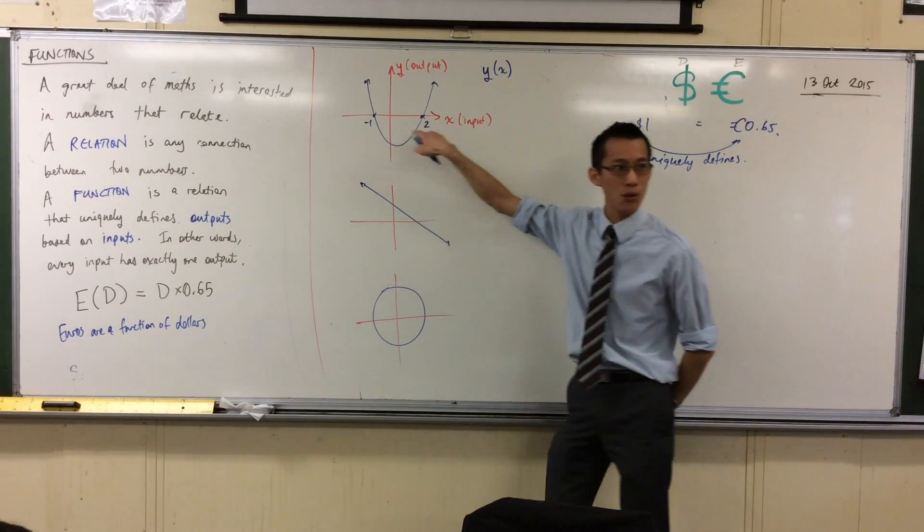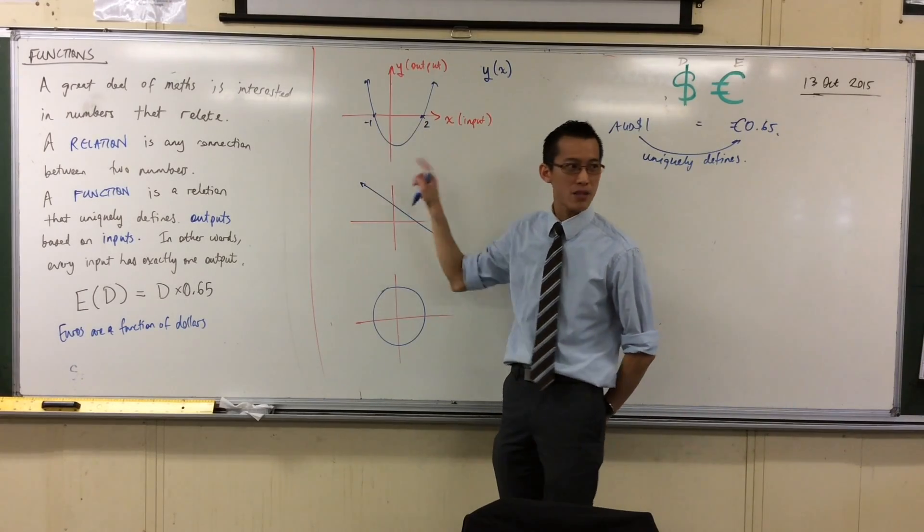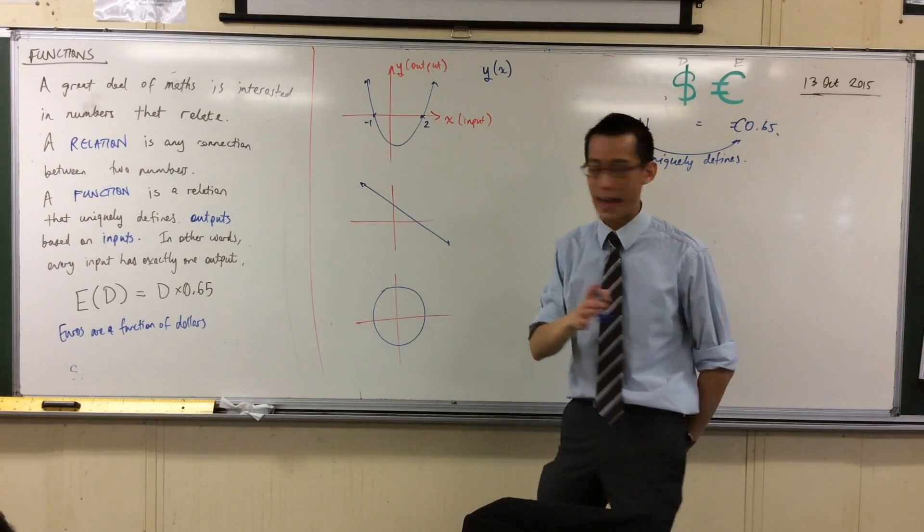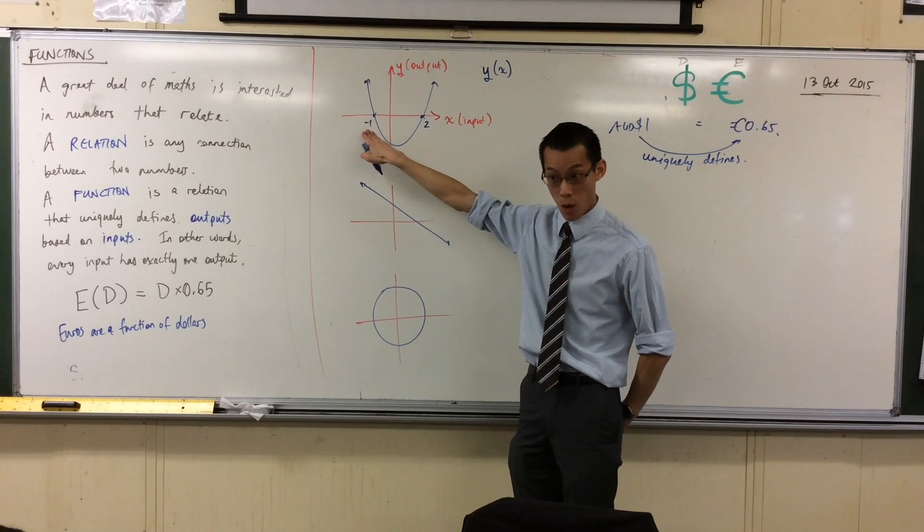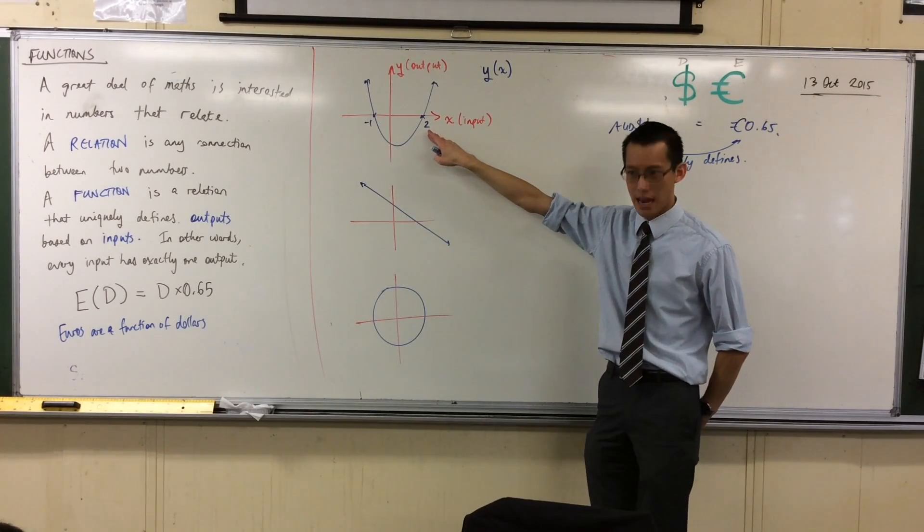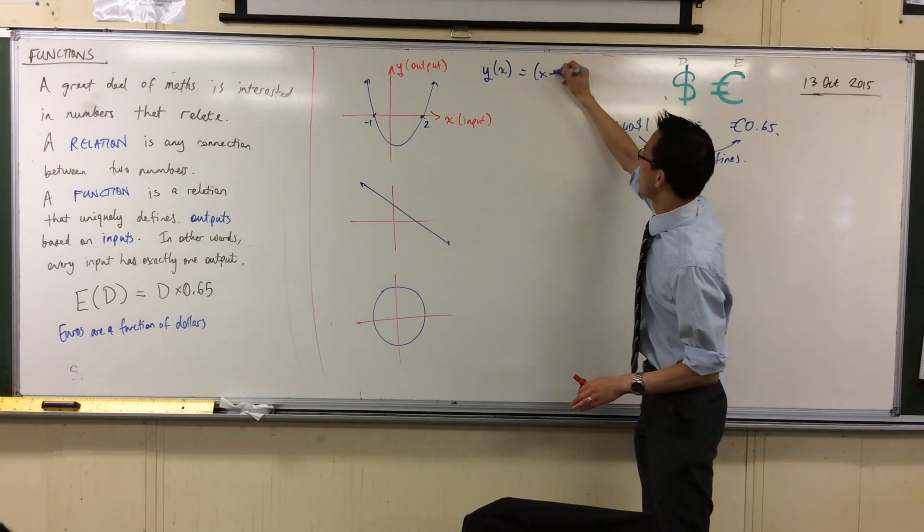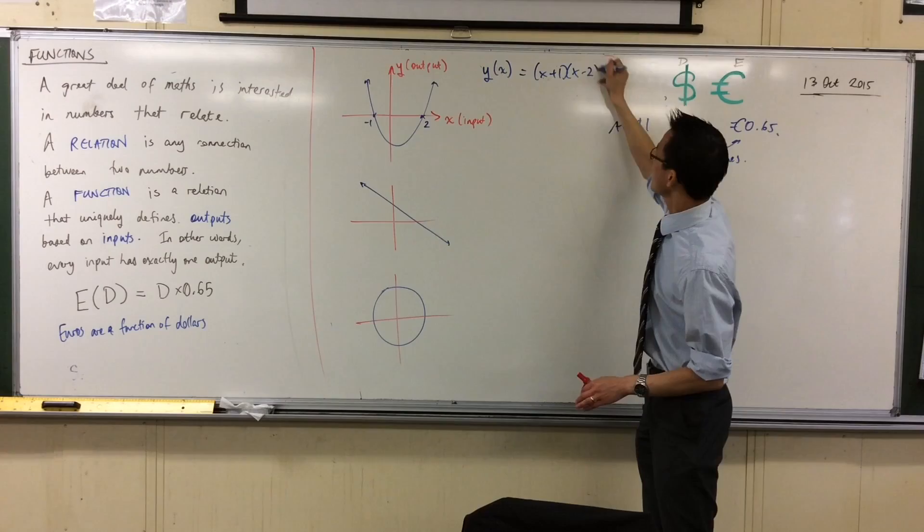It's got roots at negative one and two. So when you factorized it, the factorization would have been something like x plus one, that's what would give you this solution, and x minus two. That would have given you both of these roots. So just play pretend with me. Let's just write that in.